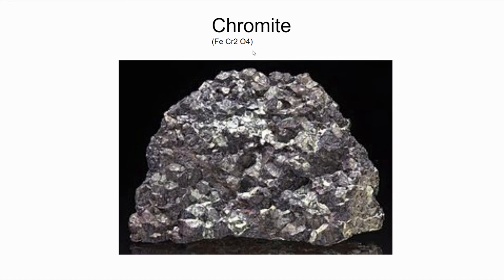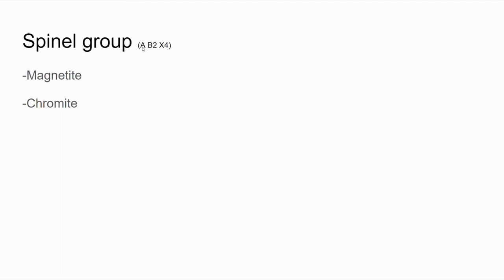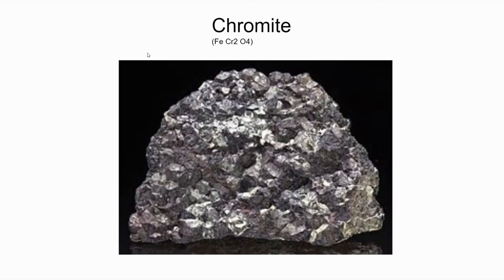We also have chromite. This is also economically significant and it is a spinel — it follows the spinel formula quite well: iron for the A, two chromiums for the B, and four oxygens for the X. Remember that the letters used are just placeholders, so their choice doesn't matter. Chromite is economically significant because it is an ore for the metal chromium, which we use quite often in modern society.